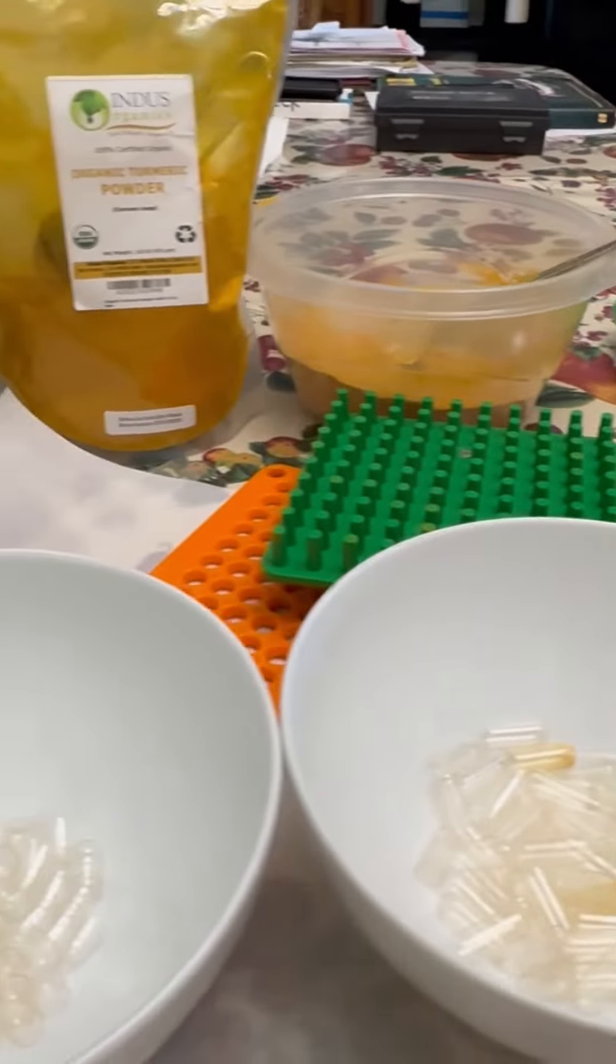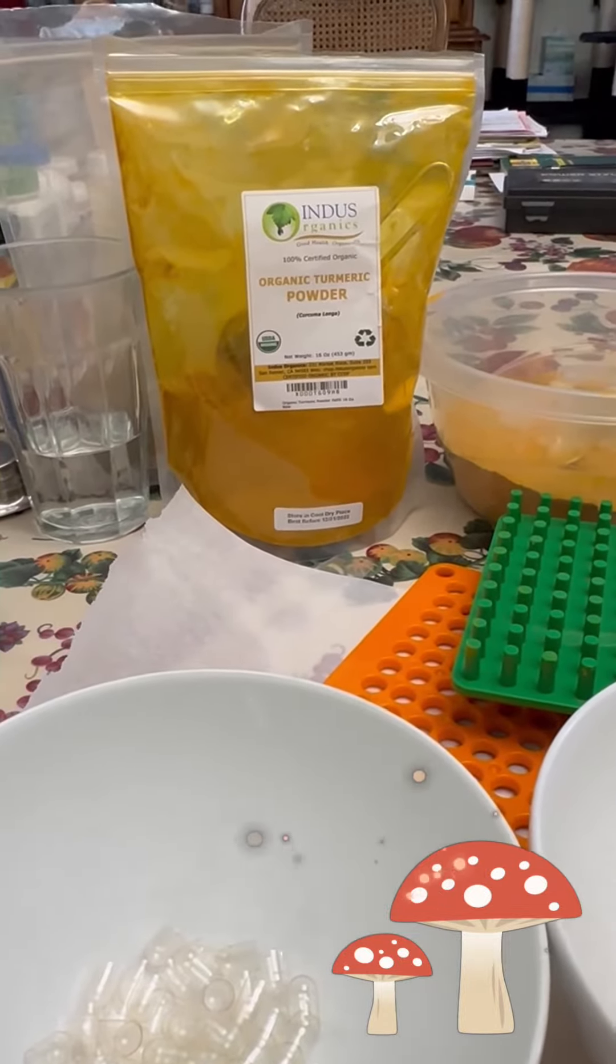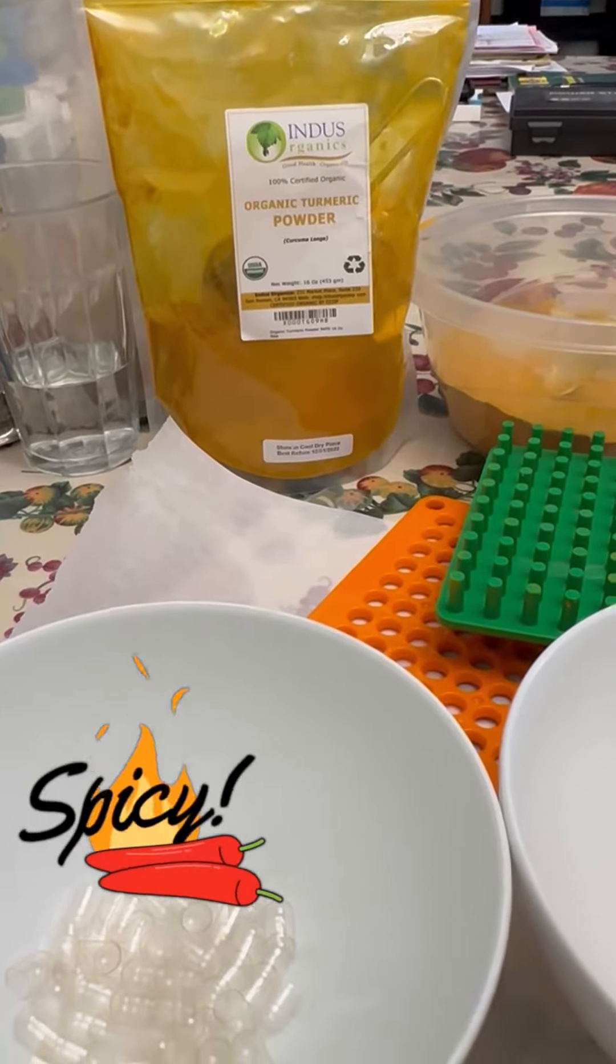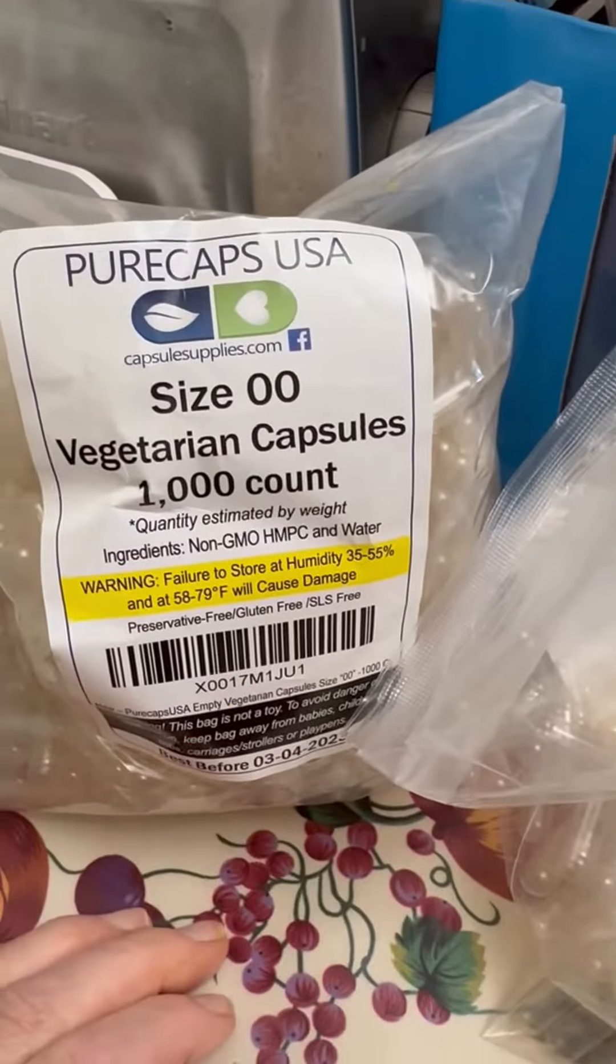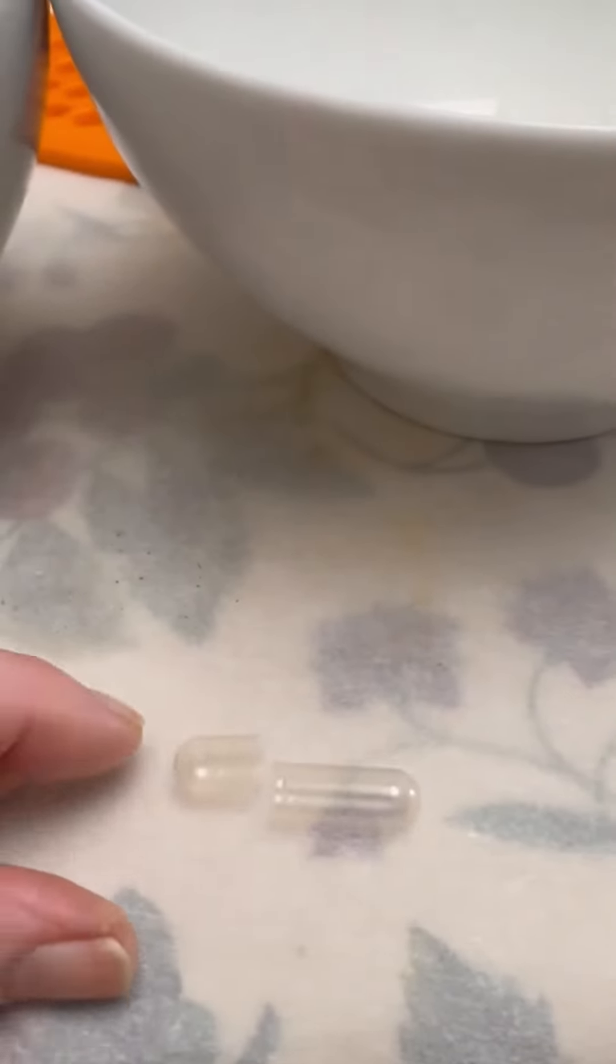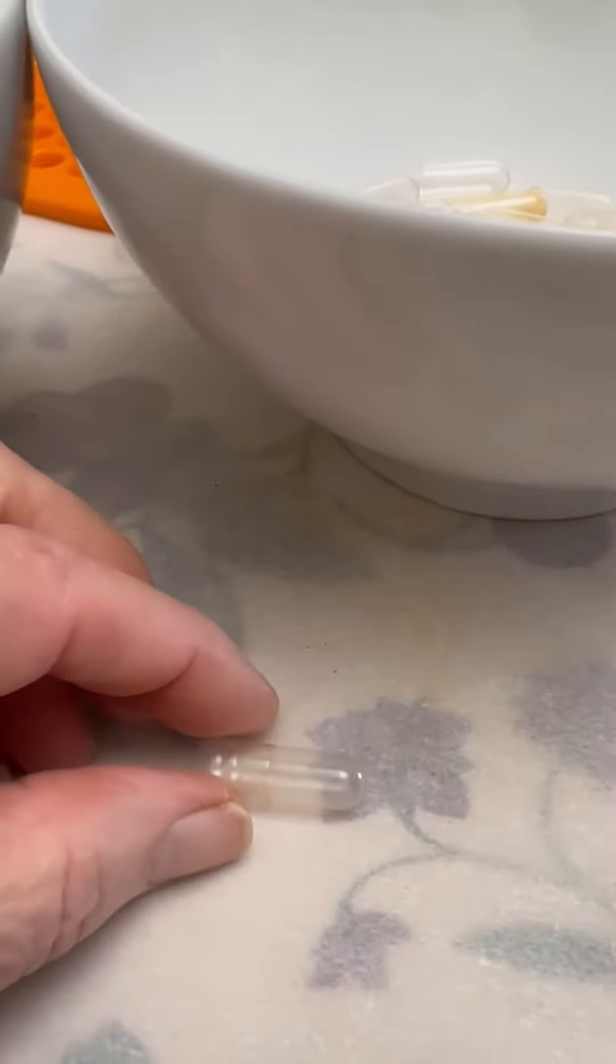Making turmeric capsules today. You take a quarter of the pepper and three quarters of the turmeric. You use vegetarian capsules—I use size zero zero. The first step is to take the two capsules apart and separate these two.